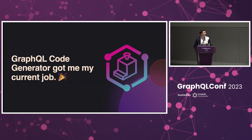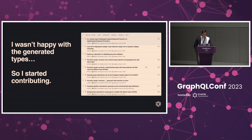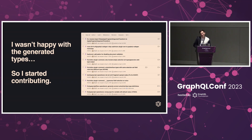Fun fact: GraphQL code generator got me my current job. How that started was around 2019 — I was using GraphQL code generator at my last company and I was just not happy with the types, especially about unions and interfaces. So I started contributing. What started as one PR eventually led to many PRs, and at some point I got a job offer and I took the opportunity.